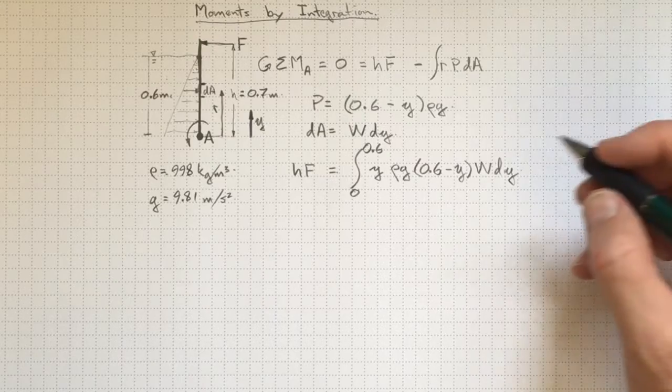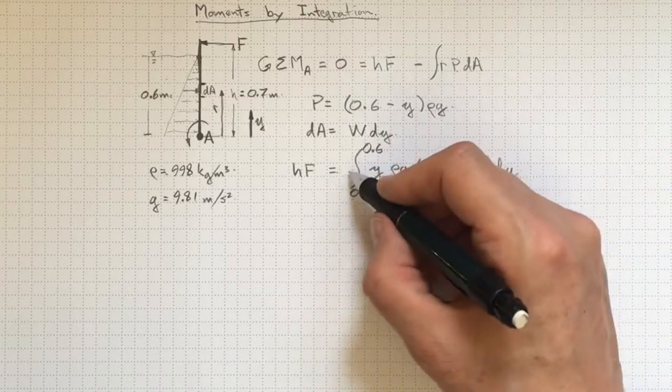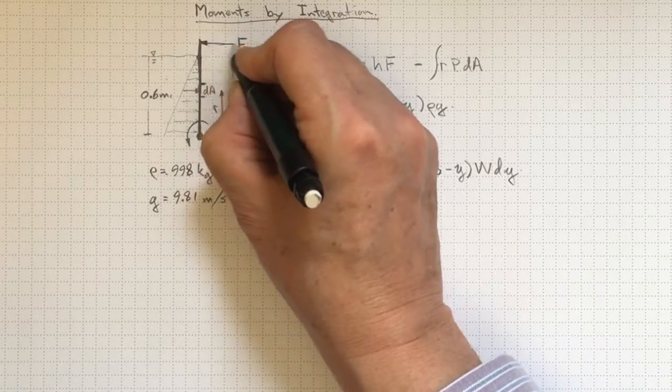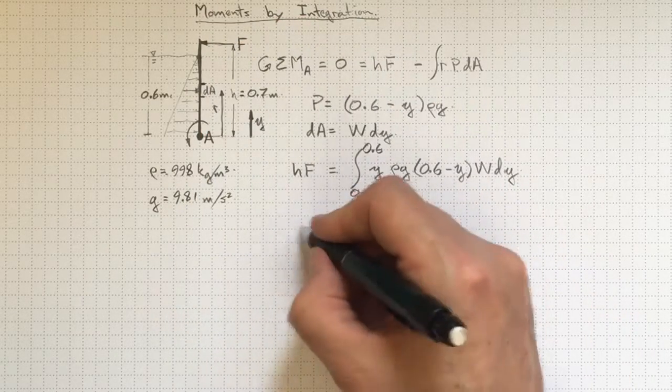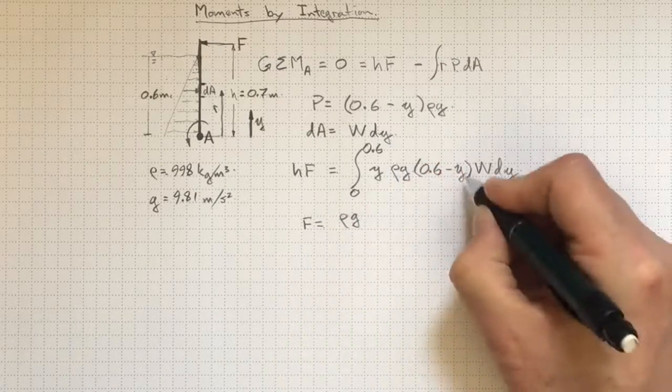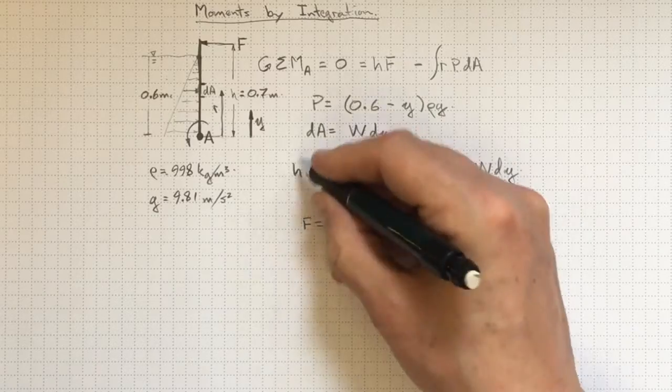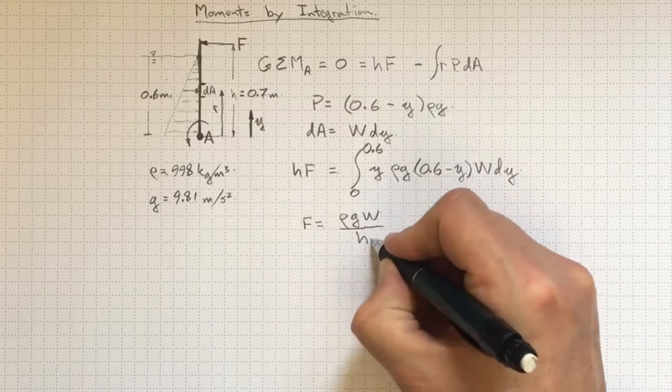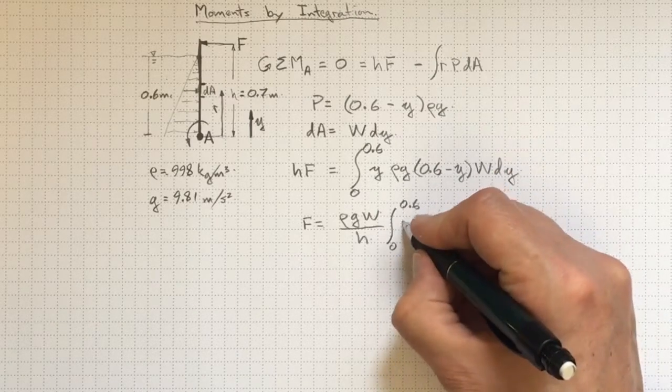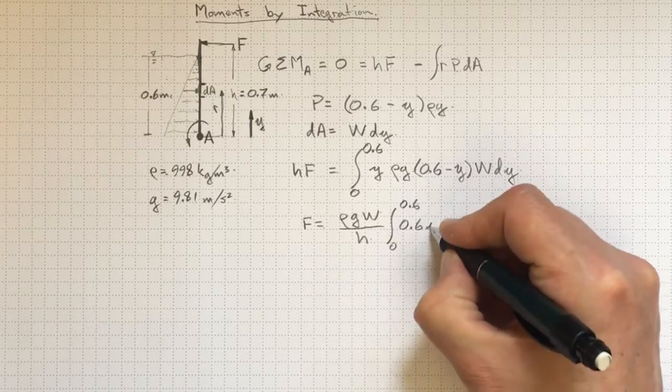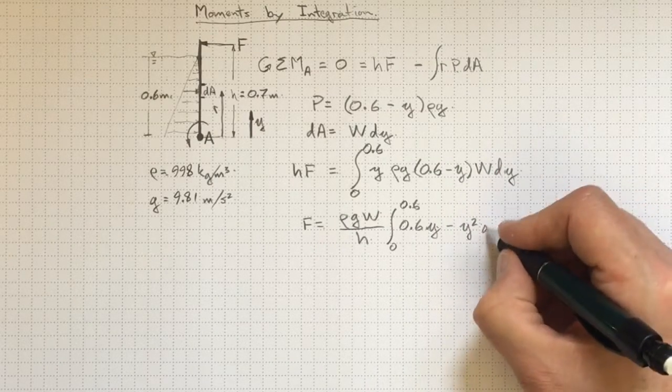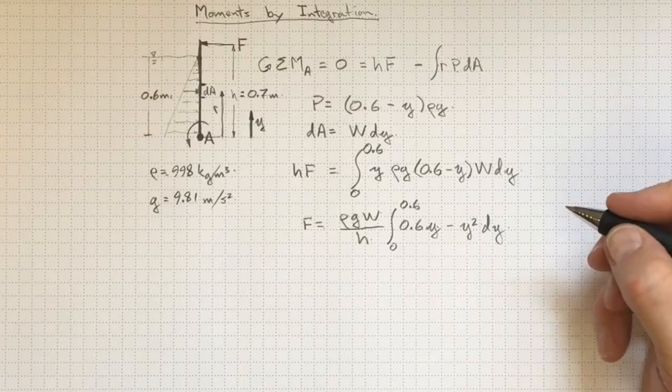So if I collect the constants outside the integral and take the H across, because I want to get this in terms of F, I'd really like to know how large that force is. I'll wind up with F equal to rho g W over H, integral from zero to 0.6 of 0.6 Y, Y times 0.6, minus Y squared dY. That's a pretty easy integral to do.